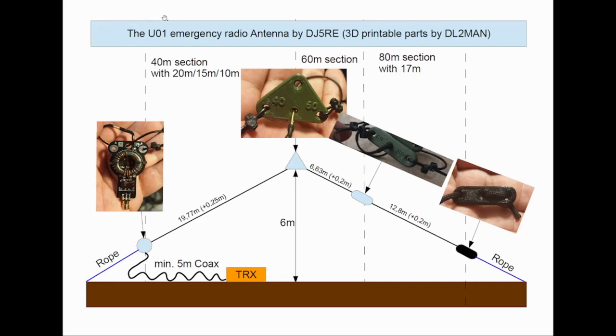The Uniform O1 emergency radio antenna is basically just an NFED half wave. But by simply adding some connectors in between, we cover a lot of bands. This is the 40-meter section.